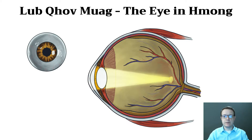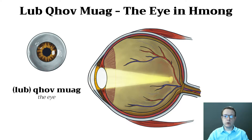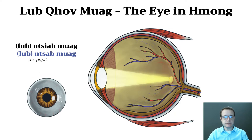Let's start with the first word, the word for the eye. This is a natural Hmong word: lo-kho-moa — the same in White and Green Hmong. Now if we're going to talk about the pupil of the eye, also a natural Hmong term: lo-n-jia-moa in White Hmong, and lo-n-jia-moa in Green Hmong.